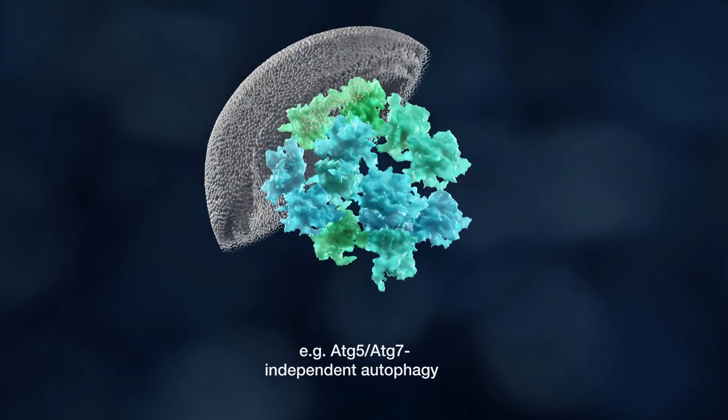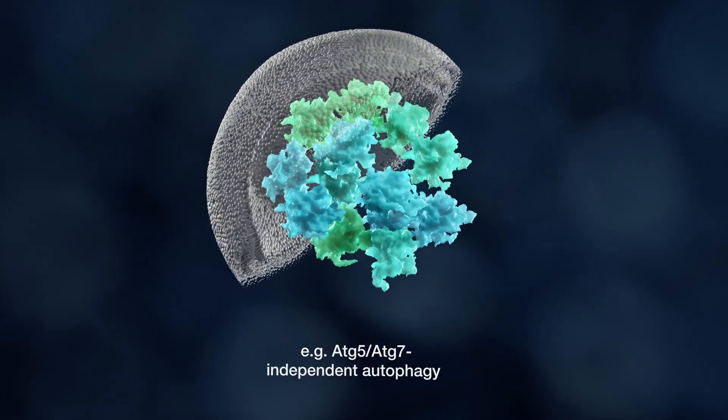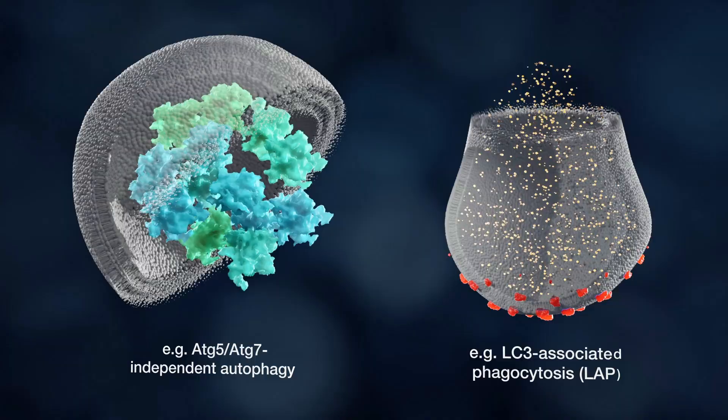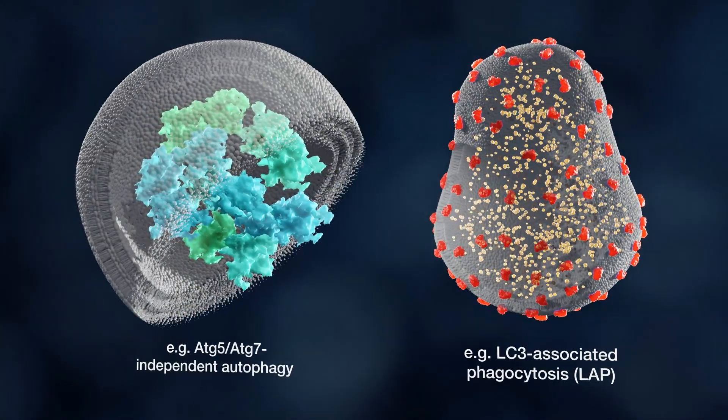However, there are forms of macroautophagy that do not require the function of all ATG modules, and those have been defined as unconventional. Conversely, a single or group of ATG proteins operate in other cellular processes.